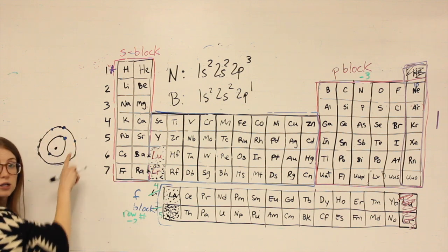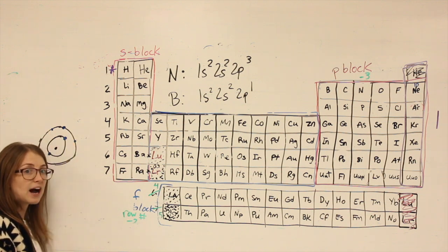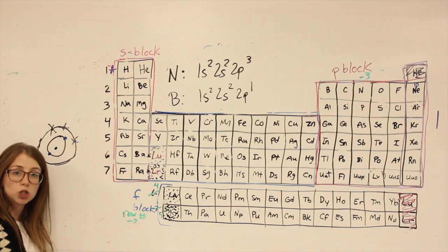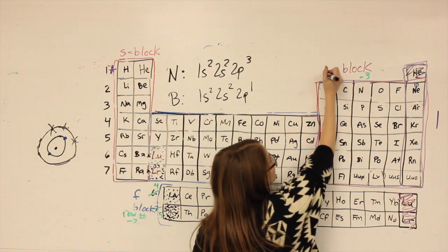One, two, three. So rather than having to gain five, it's going to be easier for boron to lose three electrons. That's why boron is a plus three ion.